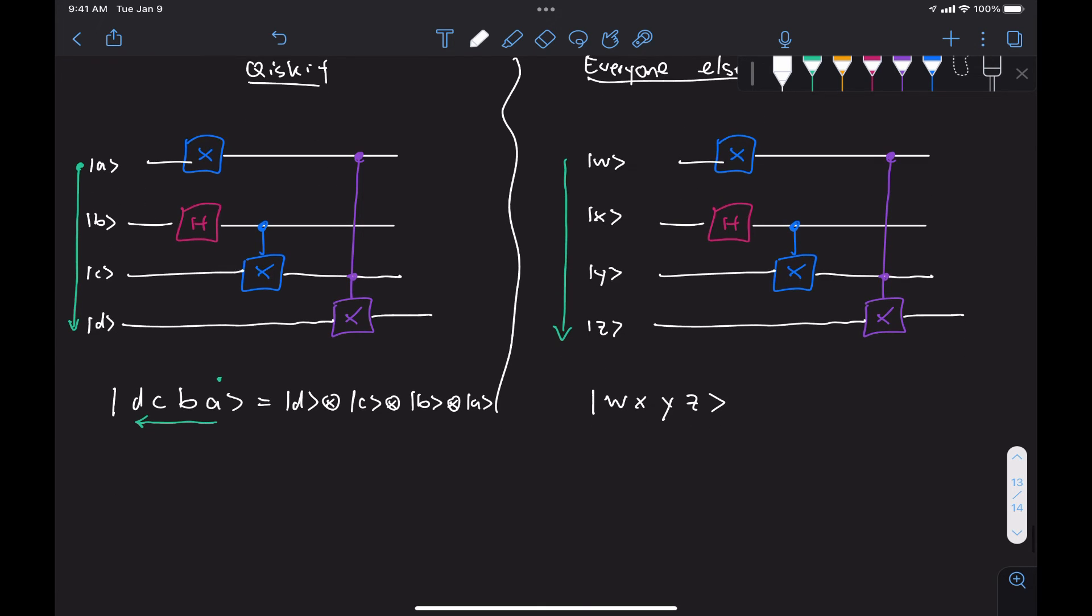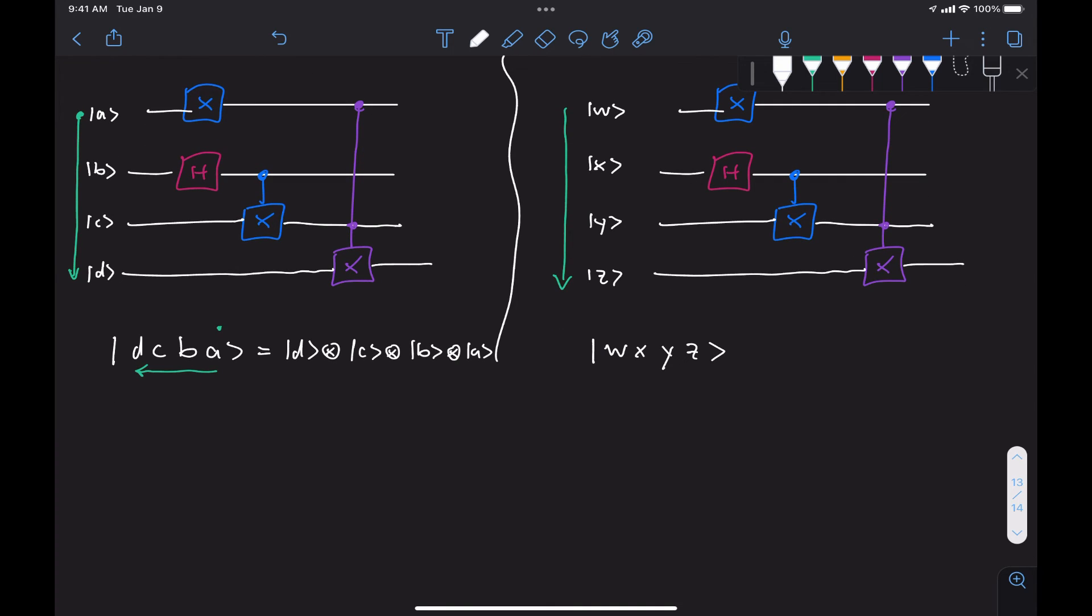And the reason this ordering is important is not just because the qubits, where they go in the ket are going to be different. Also the unitaries or the operators of full circuits are going to be different. So let's do a specific way of ordering things.